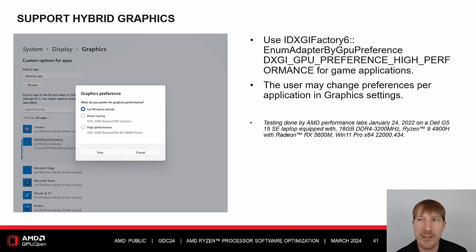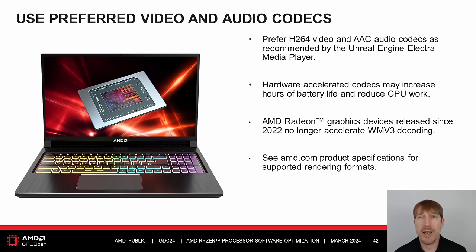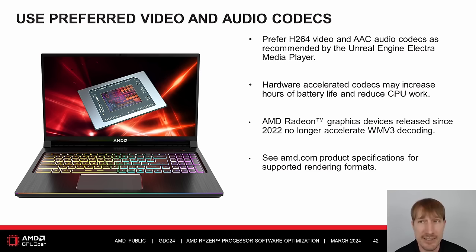Additional considerations may be necessary to ensure the expected GPU is utilized in hybrid graphics platforms. The Windows 10 Spring 2018 update added the EnumAdapterByGpuPreference function. Use DXGI GPU preference high performance for game applications. The user may change preferences per application in Windows graphics settings. Prefer H.264 video and AAC audio codecs as recommended by the Unreal Engine Electra Media Player. Hardware accelerated codecs may increase hours of battery life and reduce CPU work. Note that Radeon graphics devices released since 2022 no longer accelerate WMV3 decoding — please replace WMV3 content with H.264.